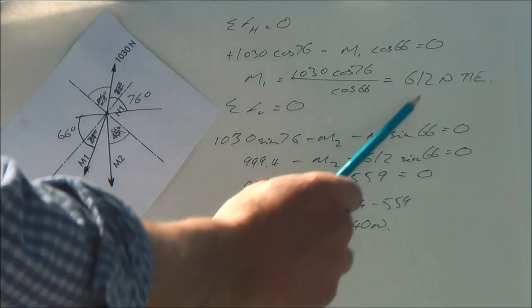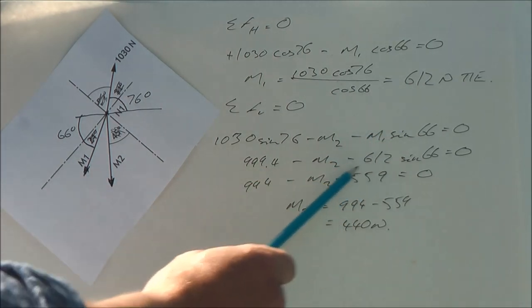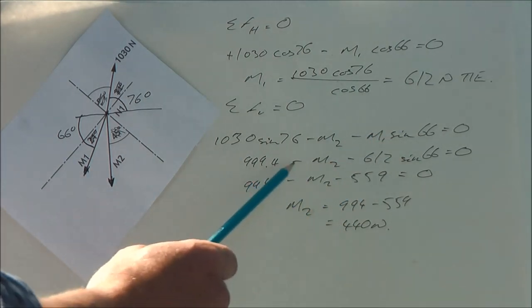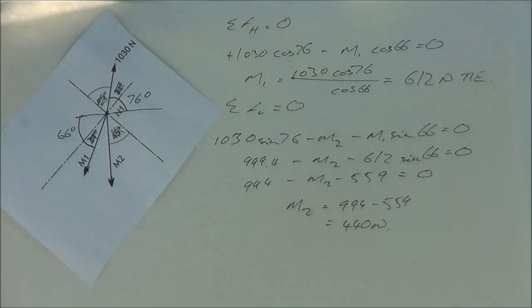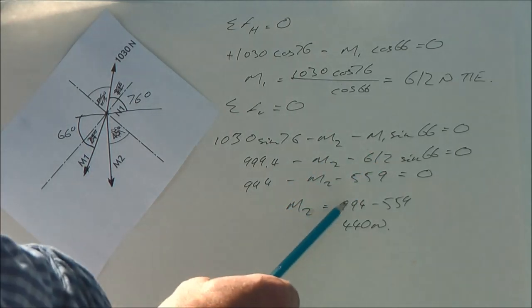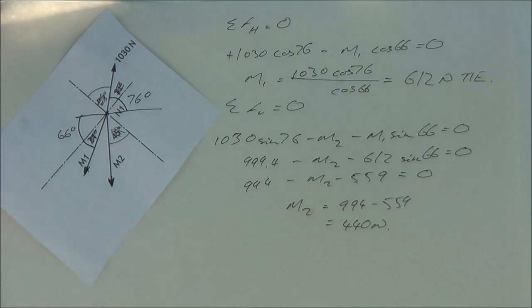Of course, by now we know what M1 is. So I drop the value in. So I've got 994 minus M2 minus 612 sin 66. Rearranging that, and we've got 440 newtons.